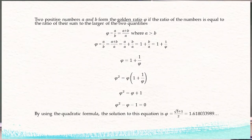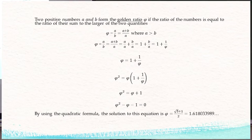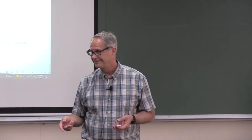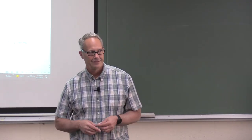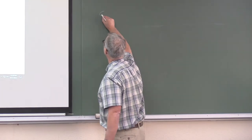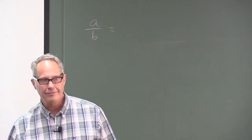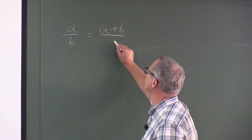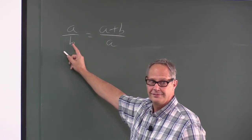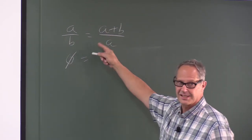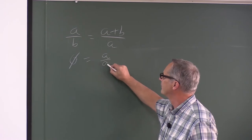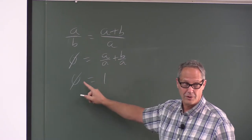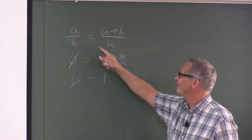What is the golden ratio? Two positive numbers A and B, where A is bigger than B, form a golden ratio if the ratio A to B is the same as the ratio of their sum to the larger number A. We call A over B the golden ratio, which is phi. We can write the right-hand side as A over A plus B over A, which is one plus the reciprocal of phi.